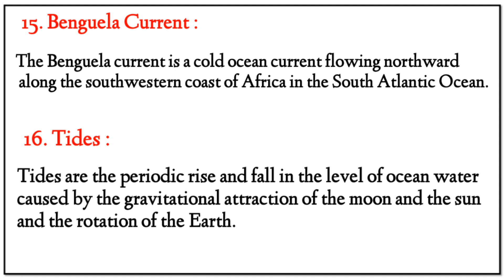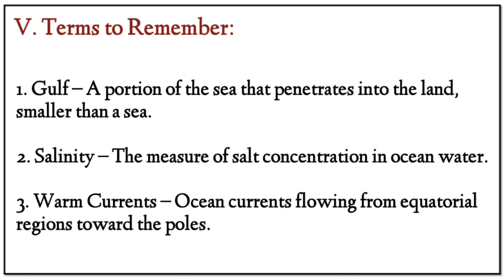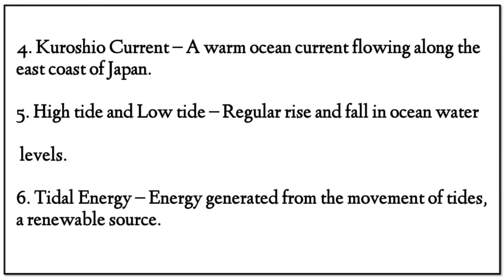Terms to Remember: Gulf — a portion of the sea that penetrates into the land, smaller than a sea. Salinity — the measure of salt concentration in ocean water. Warm currents — ocean currents flowing from the equatorial region towards the poles. Kuroshio Current — a warm current flowing along the east coast of Japan. High tide and low tide — the regular rise and fall in ocean water level. Tidal energy — energy generated from the movement of tides; a renewable source.